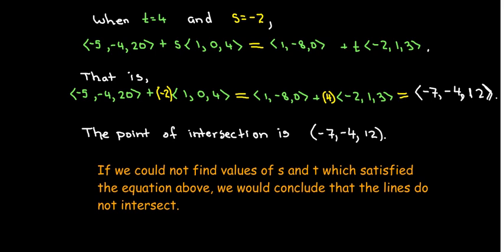Now, if we could not find any values for s and t which satisfied this vector equation—in other words, if there was no position vector which was common to both equations—then we would conclude that the lines do not intersect. I hope you found this video useful.